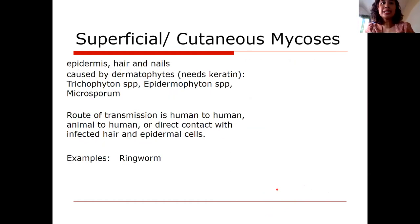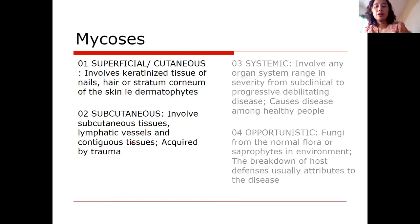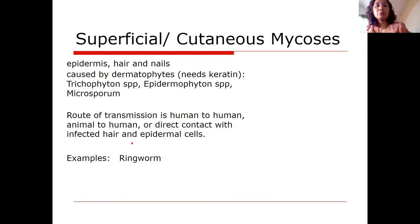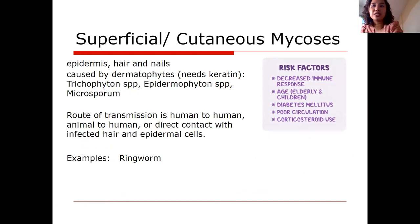Superficial or cutaneous mycoses are caused by dermatophytes. Dermatophytes love keratin — these include Trichophyton, Epidermophyton, Microsporum, and Malassezia. The most common superficial mycoses are ringworms. Transmission can be human-to-human, animal-to-human, and by direct contact. Risk factors include decreased immune response, age, diabetes mellitus, poor circulation, and corticosteroids. Healthy individuals can also get ringworm, especially if their hands are always wet or they work in damp environments.